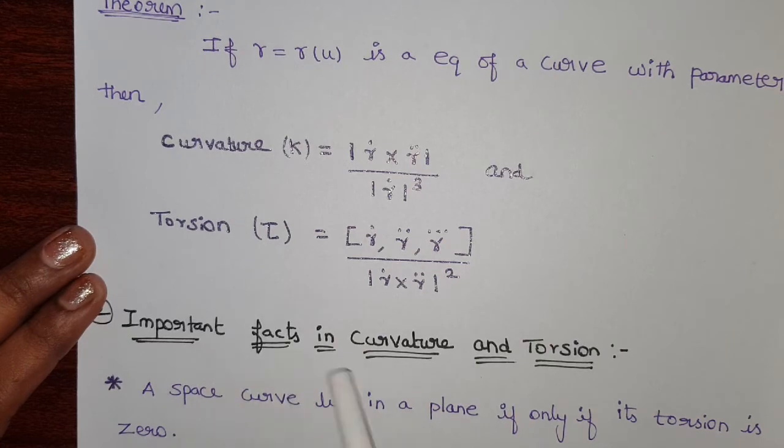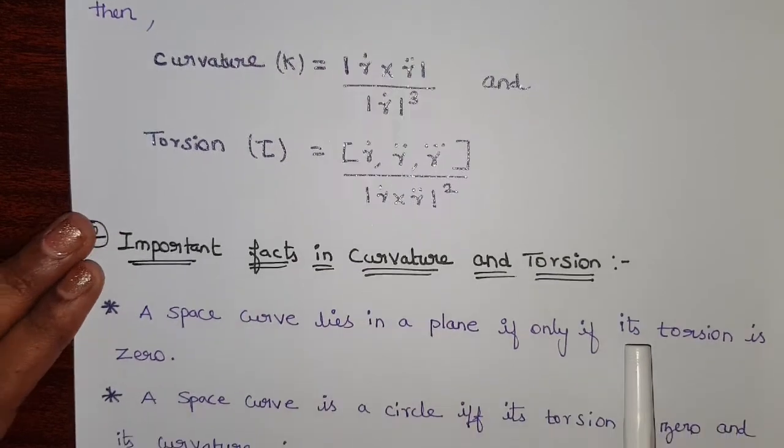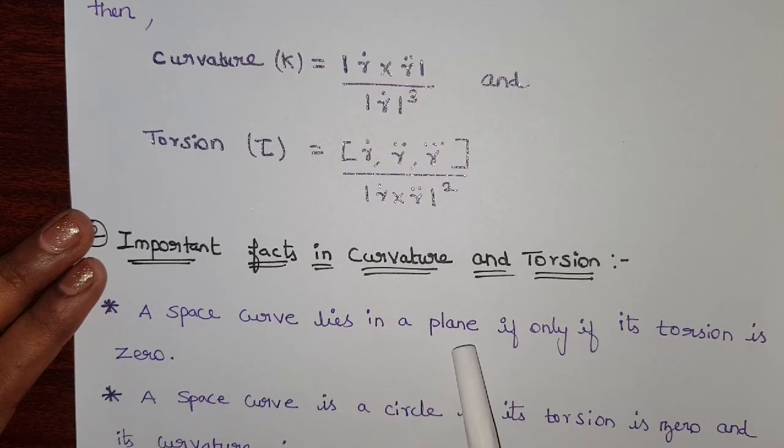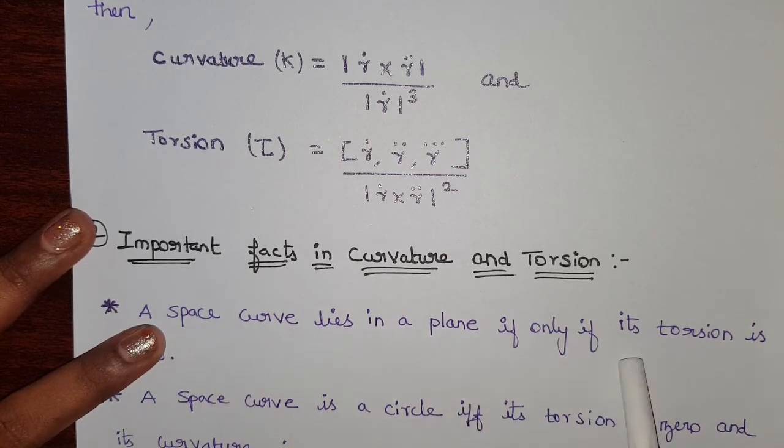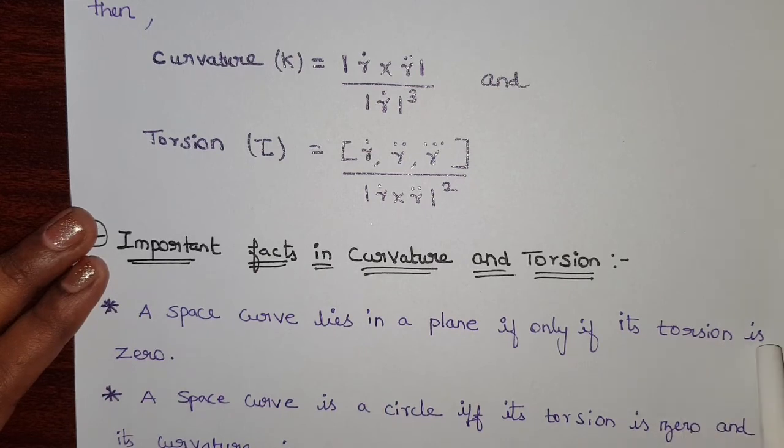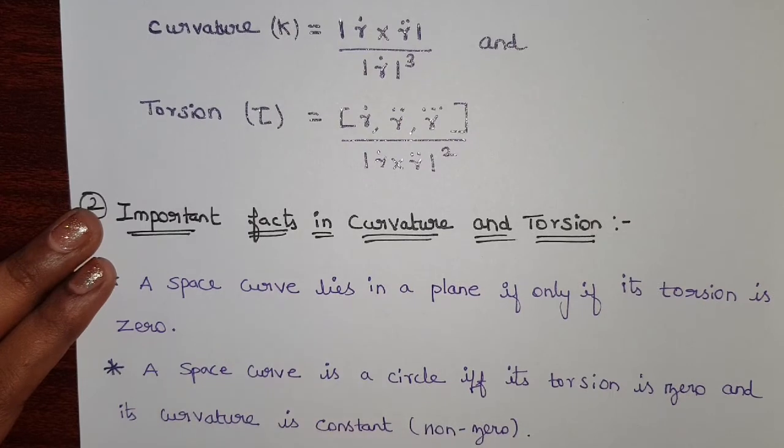Then we see important facts in curvature and torsion. A space curve lies in a plane if and only if its torsion is zero. When torsion is zero, the space curve lies in a plane. This is an important statement.